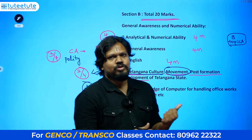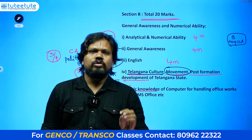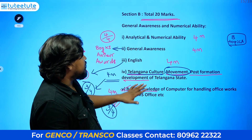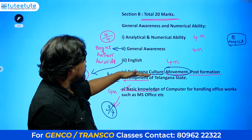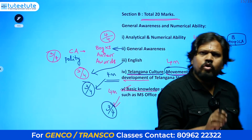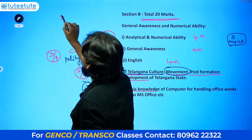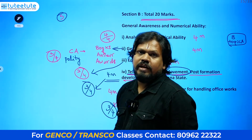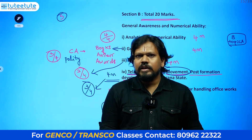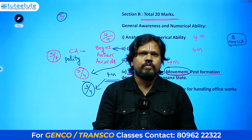For time management strategy: start with theory-type questions — English, General Awareness, Telangana Culture, and Basic Computer Knowledge — since they are quick to answer. Mark any you don't know and come back. Solve Analytical and Numerical Ability last, as 4 questions need only about 5 minutes if you have the time. Try to complete the paper within 100 to 105 minutes to stay comfortable.